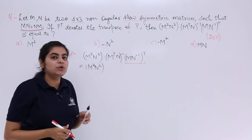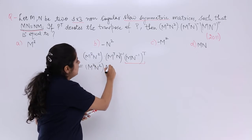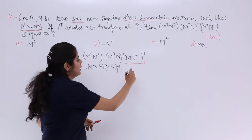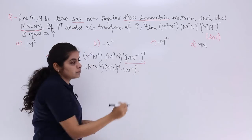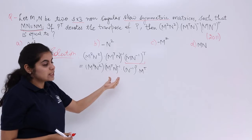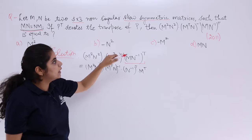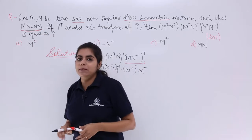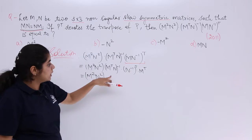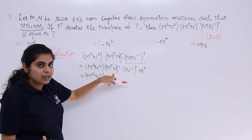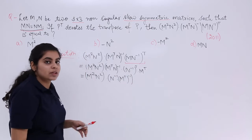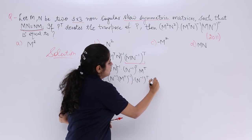We know that (AB)^T = B^T A^T — we'll be using that formula. Applying it to (MN^{-1})^T gives us N^{-T} M^T. So the expression becomes: M²N², then (M^T N^{-1})^{-1}, then N^{-T} M^T. We also have the formula (AB)^{-1} = B^{-1}A^{-1}. Applying that, (M^T N^{-1})^{-1} becomes N M^{T-1}, and the rest remains N^{-T} M^T.